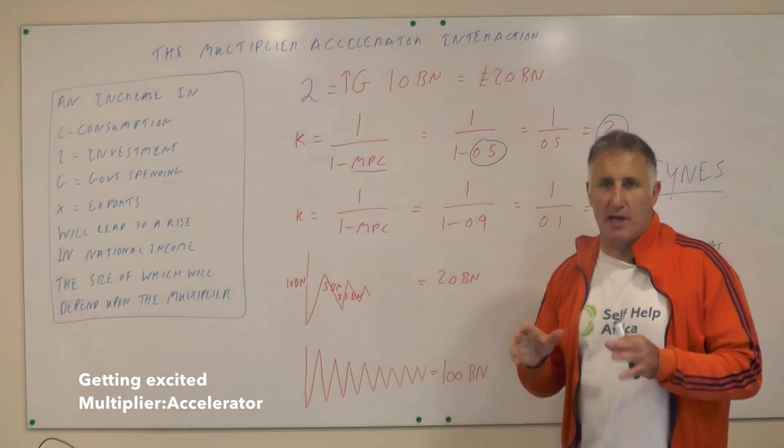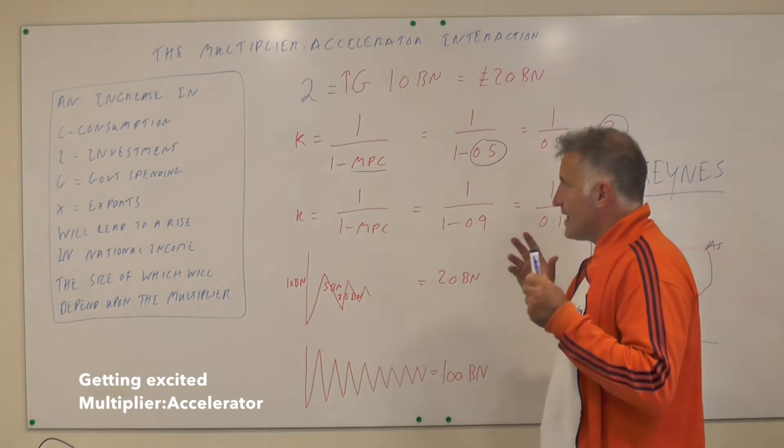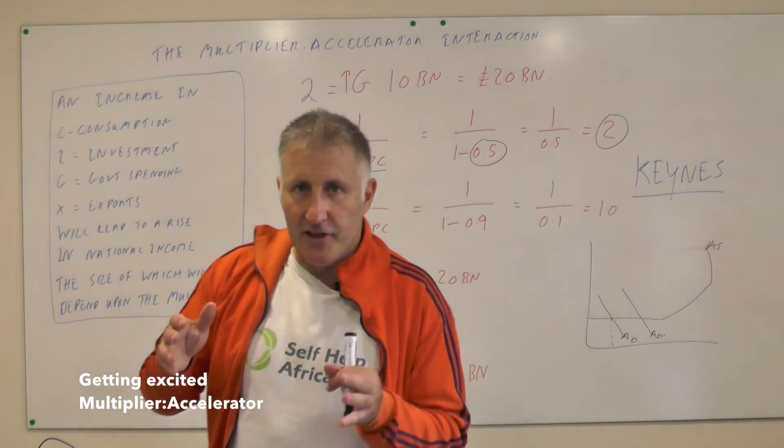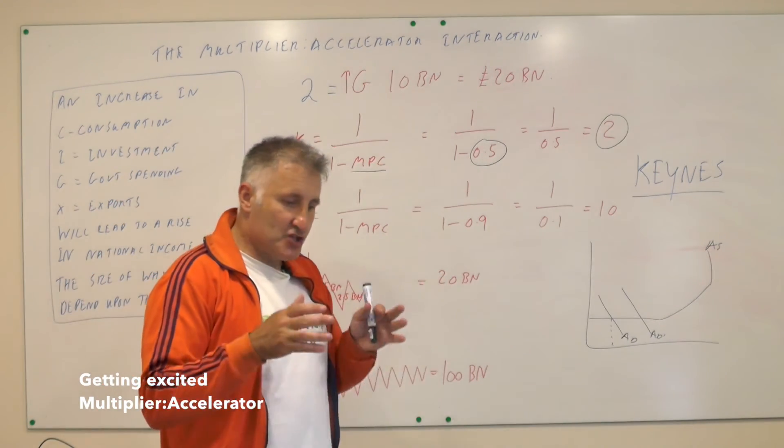If the government increases its spending by ten billion quid, we do two times ten and we get twenty billion pounds. So that is the multiplier. He worked out if you put money into the economy, then the likelihood is that you're going to get more money out of the economy.